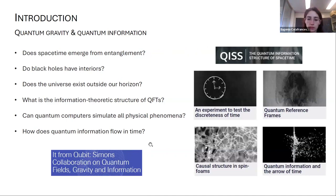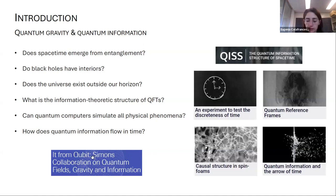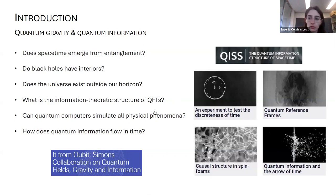Here I highlight two of the main initiatives that work at the interface of quantum gravity and quantum information. One is 'It from Qubit,' which started in the context of string theory but touches many topics not directly related to string theory. The other is 'Quantum Information Structure of Spacetime.' If you look online, you will find many resources on what is going on in this field.